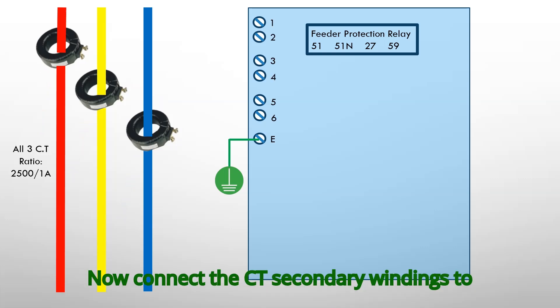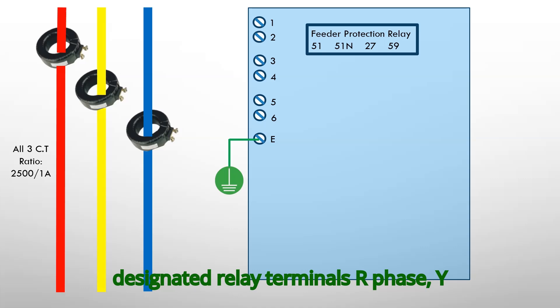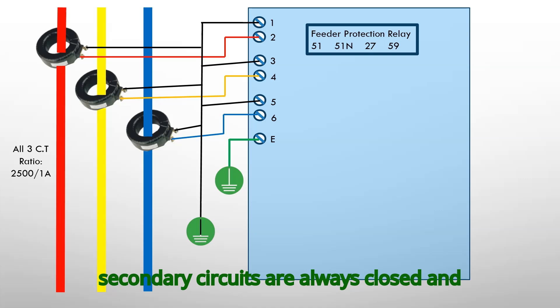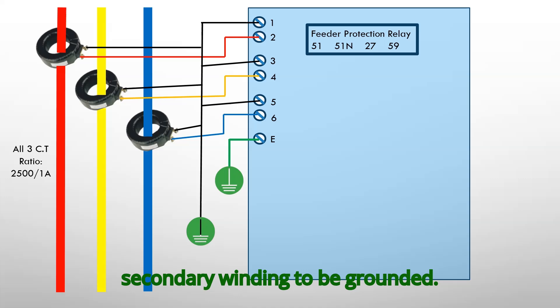Connect the CT secondary windings to the feeder protection relay terminals — R-phase, Y-phase and B-phase. Ensure CT secondary circuits are always closed and never left open. The return supply from the CT secondary winding must be grounded.